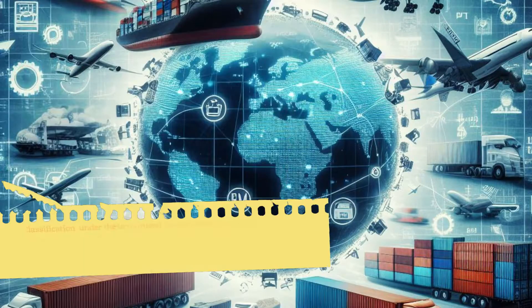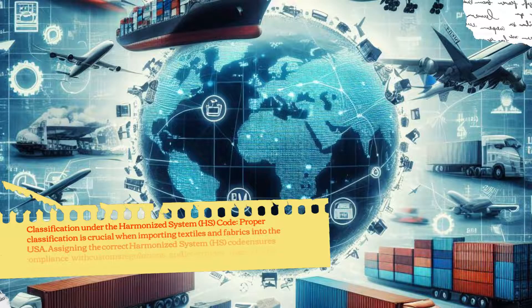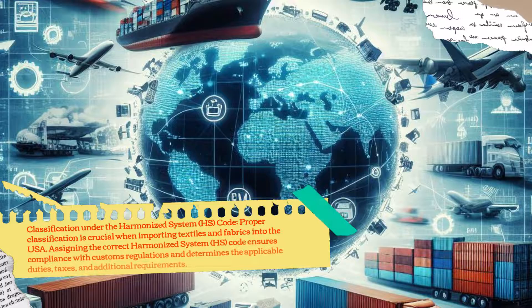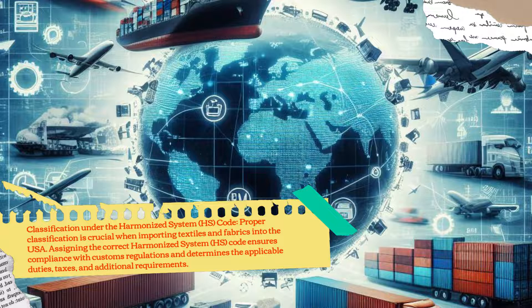Classification under the Harmonized System Code. Proper classification is crucial when importing textiles and fabrics into the USA. Assigning the correct Harmonized System Code ensures compliance with customs regulations and determines the applicable duties, taxes, and additional requirements.